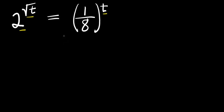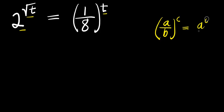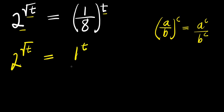I can start it this way. If you have a divided by b raised to the power of c, this equals a to the power c divided by b to the power c. Applying the same thing here: 2 to the power square root of t equals 1 to the power t divided by 8 to the power t.